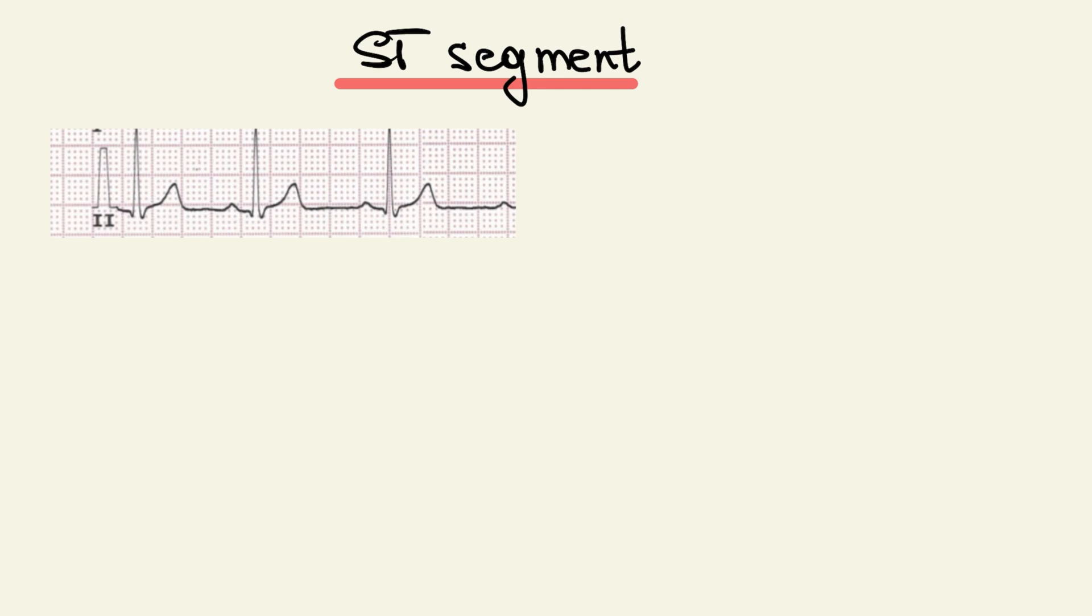ST segment. It's an isoelectric section of the ECG between the end of the S wave, J point, and the beginning of T wave. This segment can tell us about myocardial injury if we have ischemic symptoms. In normal, ST segment lay on isoelectric line plus minus 0.5 mm. On lead V1 to V3, we can see ST segment elevation less than or equal to 2 mm. And it's normal, especially for young people.